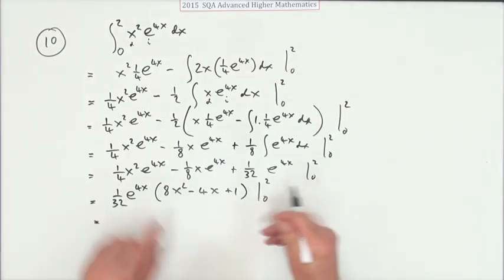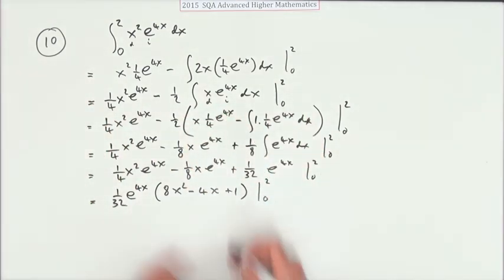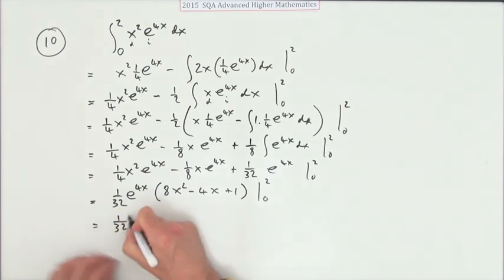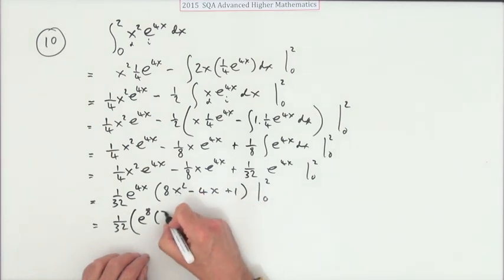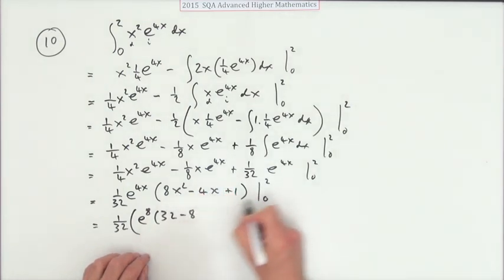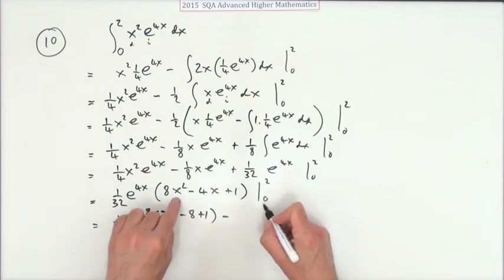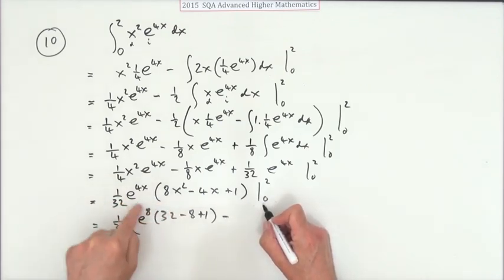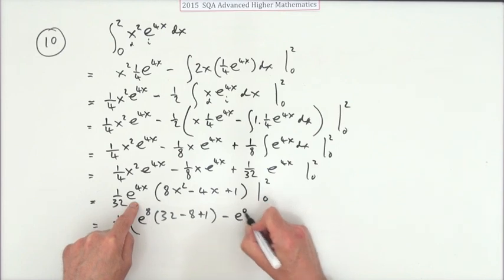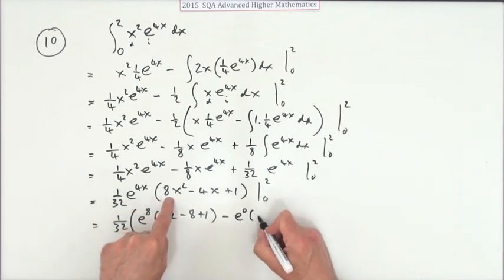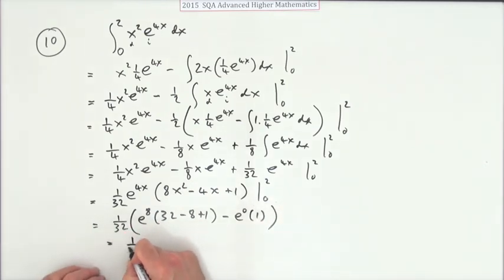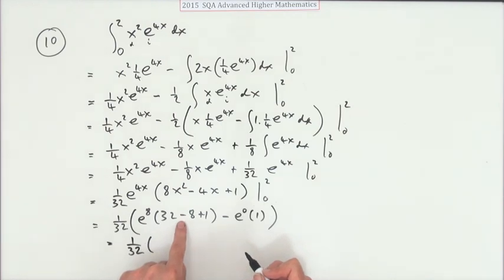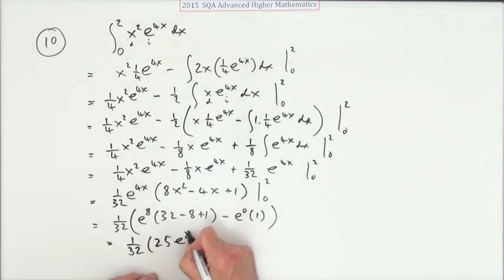I'd rather work it out at the end than carry numbers forward. Evaluating: at x = 2, that's 1/32 times e^8 times (8·4 − 8 + 1) = 1/32 · e^8 · 25. At x = 0, e^(4·0) = e^0 = 1, and the bracket gives 0 − 0 + 1 = 1. So altogether: 1/32 (25e^8 − 1), which is the exact answer.